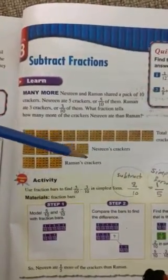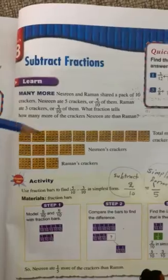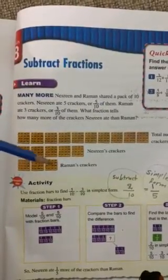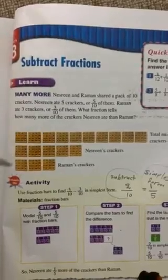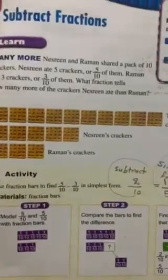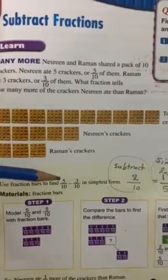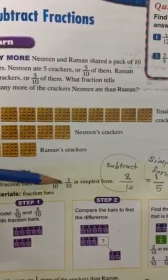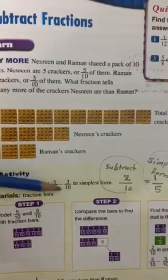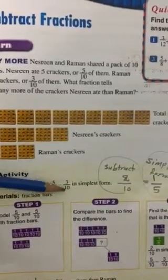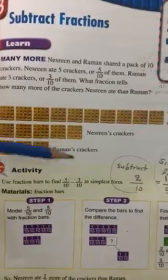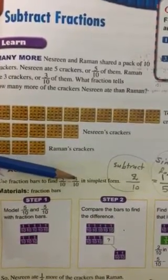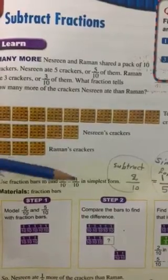Nasrin ate five crackers out of 10 crackers and Raman ate three crackers out of 10 crackers. So the fraction is 5 out of 10 for Nasrin's part and you are going to put a minus sign in here because we have subtraction, and Raman ate three pieces of the crackers out of 10 pieces of them.